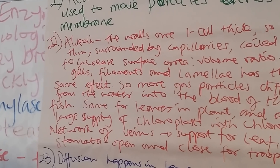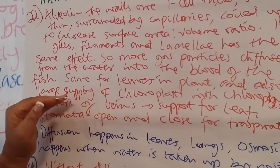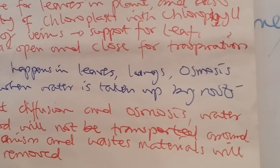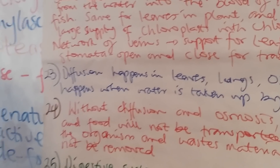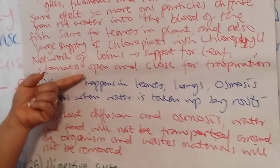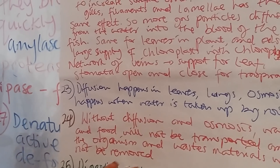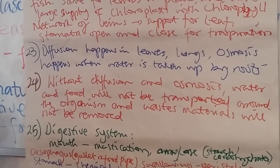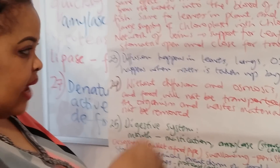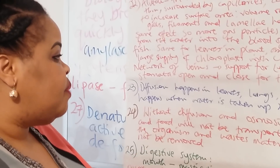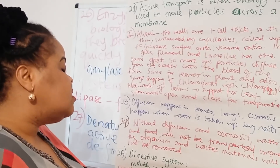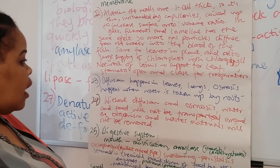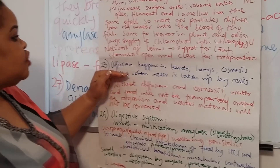Leaves in plants also follow the same principles. They are very flat and thin, just like alveoli walls are one cell thick. They have a large supply of chloroplasts with chlorophyll which absorbs sunlight for photosynthesis, and a network of veins that support the leaf and carry out transportation and efficient gas exchange. The stomata — pores on the surface of the leaf — open and close for transpiration, which is the evaporation of water out of the leaves, similar to sweating. When stomata open, carbon dioxide also diffuses in for photosynthesis and oxygen diffuses in for respiration.